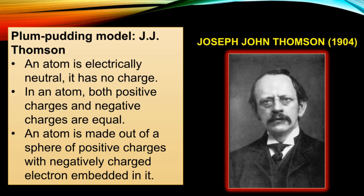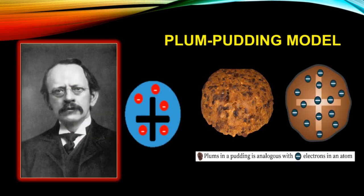The atom consists of negatively charged particles. The negatively charged particles, or electrons, are the plums in a positively charged pudding. In an atom, both positive and negative charges are equal. An atom is made of a sphere of positive charge with negatively charged electrons embedded in it.